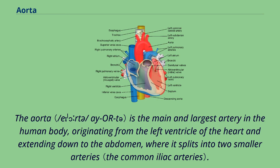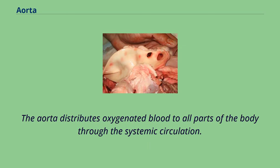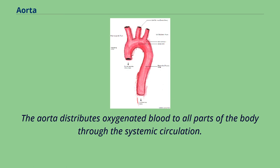The aorta is the main and largest artery in the human body, originating from the left ventricle of the heart and extending down to the abdomen, where it splits into two smaller arteries. The aorta distributes oxygenated blood to all parts of the body through the systemic circulation.